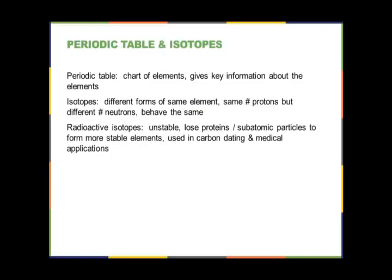The periodic table is your chart of elements and gives you key information about each element. Different types of periodic tables provide different levels of detail — it's hard to fit all possible information onto a single sheet. Generally, they all give you the mass number and atomic number as well as the name of the element, and they all share the same arrangement.